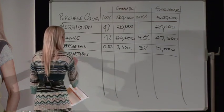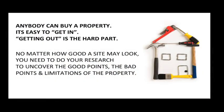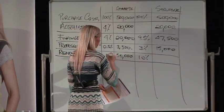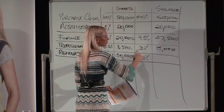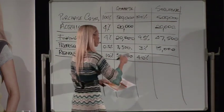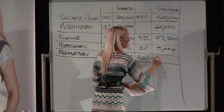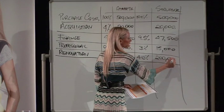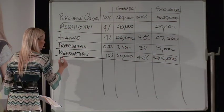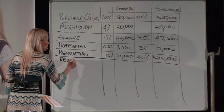Your renovation cost is your physical construction budget. Regardless of whether it's structural or cosmetic, you spend 10% of the property value on a cosmetic reno — so on a $500,000 house that's $50,000. For a structural renovation it's 40%, which is $200,000. That's your construction budget — don't go a dollar over it.